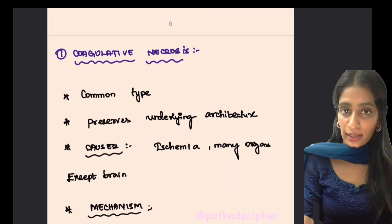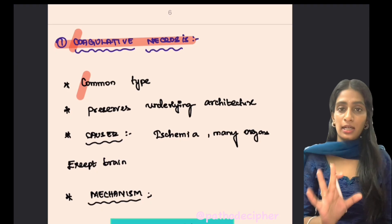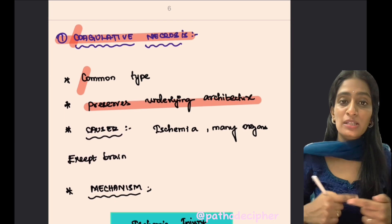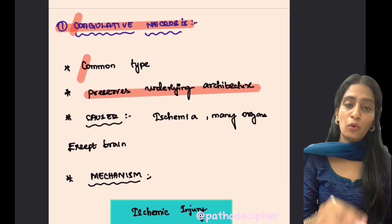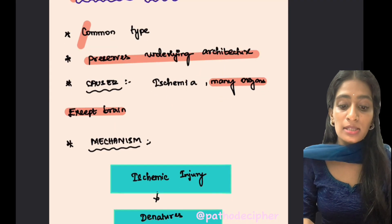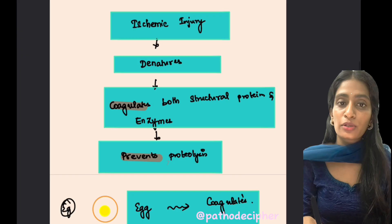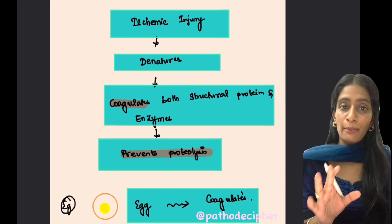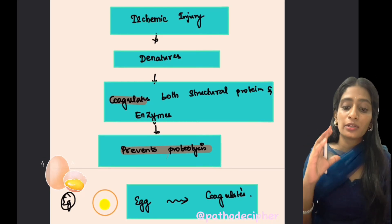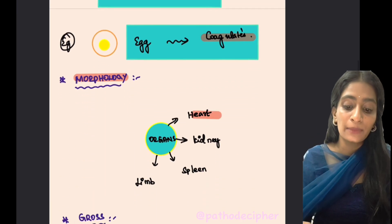Coagulative necrosis is the most common type. The key point is that it preserves the underlying architecture, but the nuclear and cytoplasmic details are lost. It mostly affects solid organs except the brain. The mechanism is that ischemic injury coagulates both structural proteins and enzymes, preventing proteolysis — similar to how boiling an egg causes the albumin to become white and solid. Organs affected include the heart, kidney, spleen, and limb.